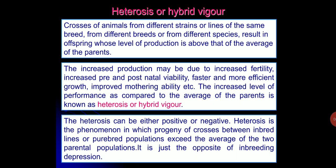Today we will see Heterosis or Hybrid Vigor. In this chapter we will see what is heterosis and why it is important in case of crossbreeding or outbreeding. It has been seen that crosses of animals from different strains or lines of the same breed, or from different breeds or different species, will result in offspring whose level of production is above the average of the parents.